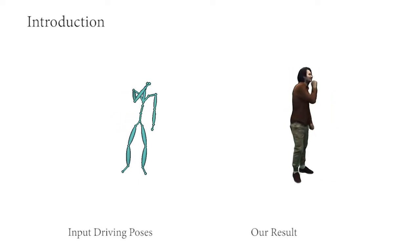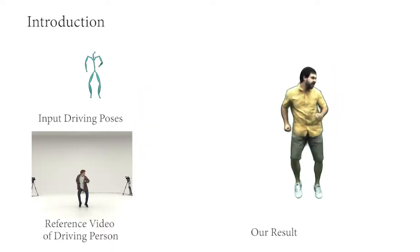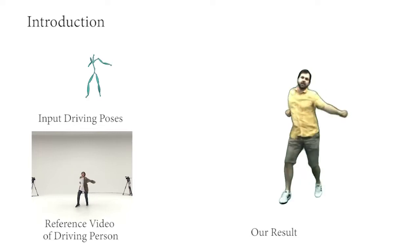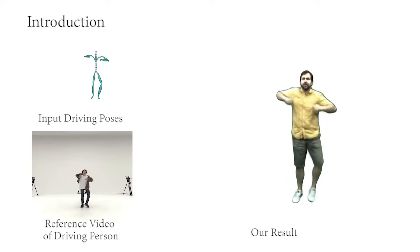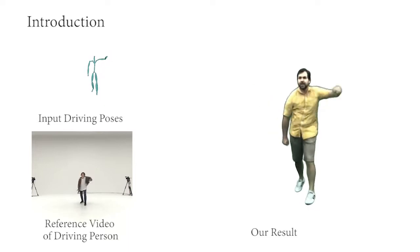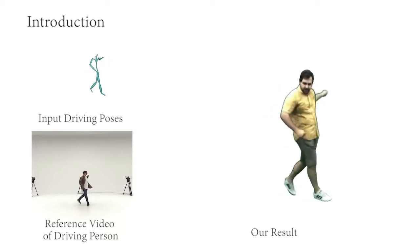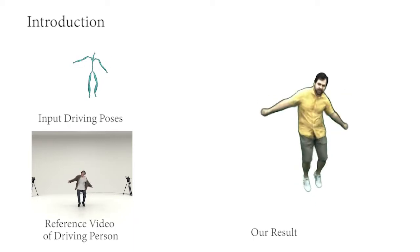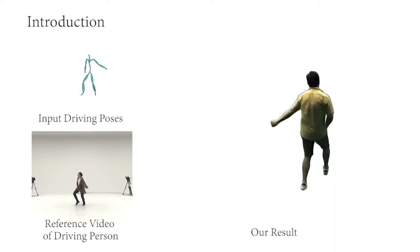We can freely change the viewpoint for rendering. Neural Actor generalizes well to unseen poses, which starkly differ from the ones in the training. Here we show a challenging dancing performance from the AIST dataset, which was not seen during training. Note that our method also generalizes well to novel views.